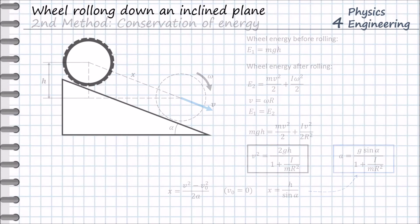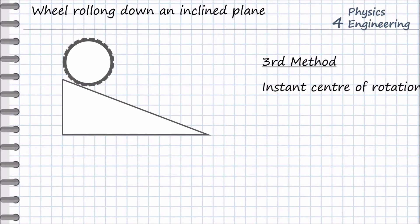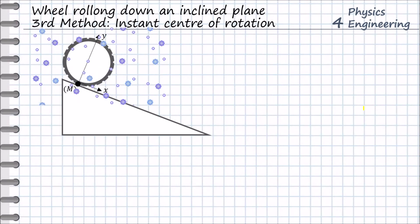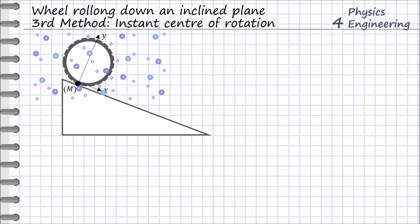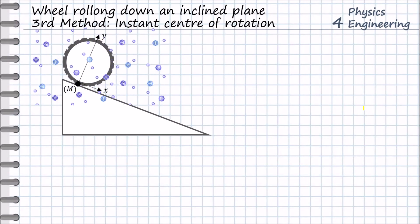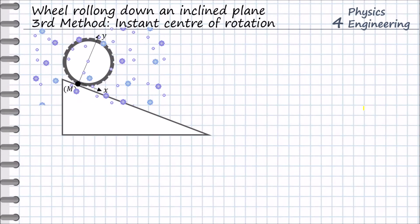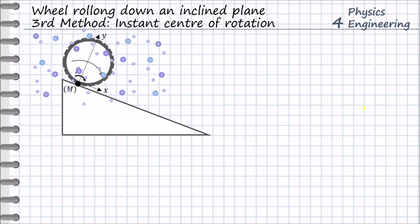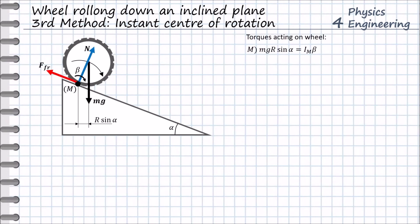Now we go to the third method: consideration of the instantaneous center of rotation. This time we connect the coordinate system to the point where the wheel contacts the slope — we call it point M. We use the fact that point M on the wheel always has zero velocity. If we freeze in time, the coordinate system has zero velocity and can be treated as an inertial reference frame, so we can apply Newton's laws. At that instant, the wheel rolls about point M with angular acceleration beta. We define the forces on the wheel and write the torques about point M. The reaction and friction forces give zero torque, so we have torque only from the gravity force.